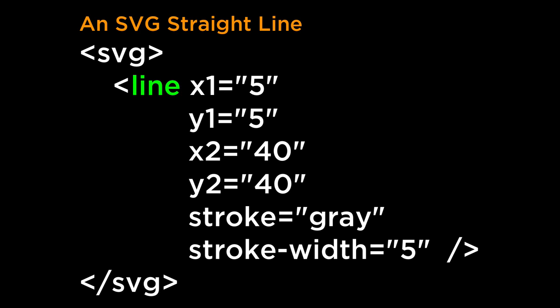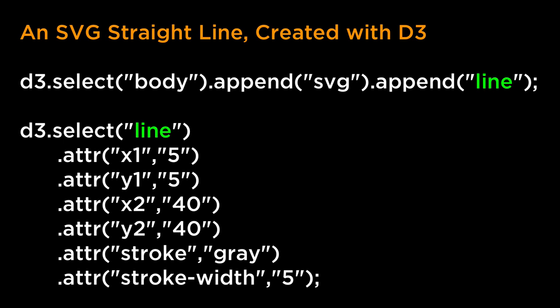The SVG Straight Line takes in six main inputs: the X1 and Y1, which is where the line starts; the X2 and Y2, which is where the line ends; and Stroke and Stroke Width, which is the color of the line and the stroke width. The Stroke and Stroke Width are necessary because an SVG line is dimensionless, so by applying a Stroke Width greater than zero we can see the line. With D3, we can append an SVG container and then append the SVG Straight Line Basic Shape, then define the attributes to have it appear on the screen. Each of these attributes can be transitioned as it is a number.